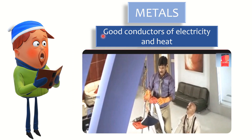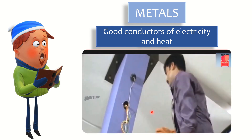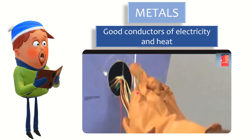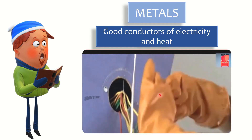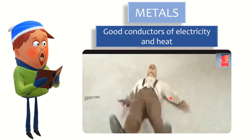Coming to electrical and heat conductivity — metals are good conductors of electricity. That is why copper and aluminum wires are used for electric transmission. When we connect the wires, electricity passes and you can get a current shock. So metals are good conductors of electricity and heat. By the way, humans are also good conductors of electricity, so be careful when working with electric circuits.